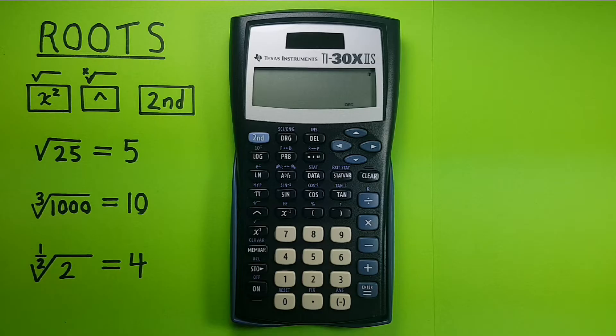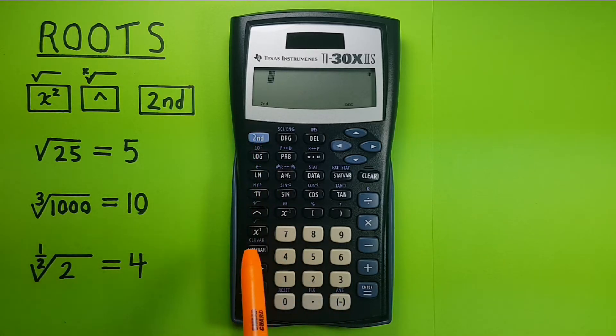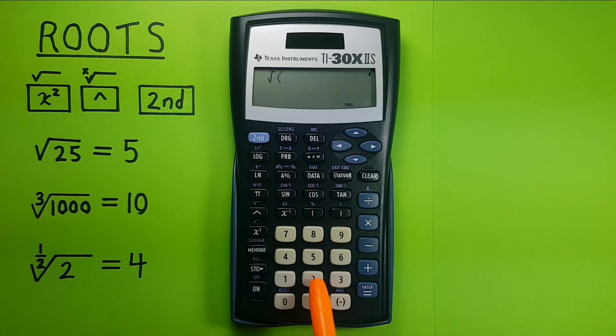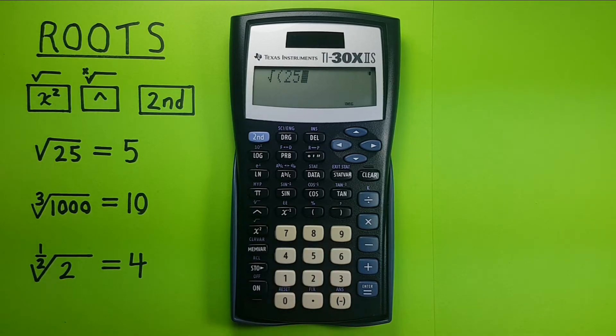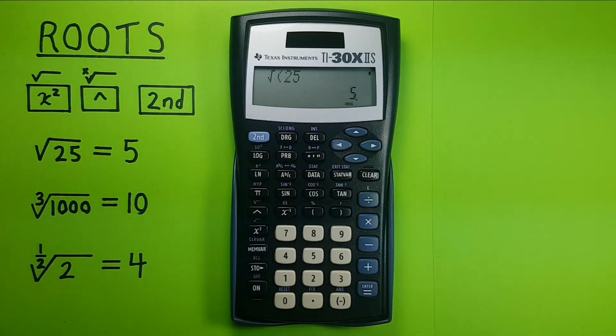Alright to get started if we want to simply find a square root of let's say 25 we would enter the second function of the x squared key so we get the root symbol on the top there, enter the 25 and then press enter and we see that the result of this is 5. The square root of 25 is 5.